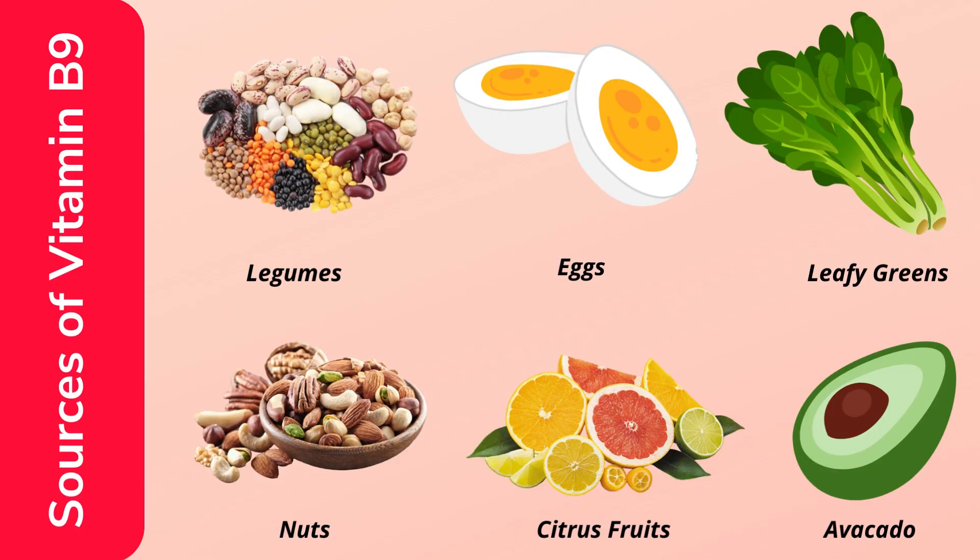Now let's look at the various sources of vitamin B9. These can be found in various foods and vegetables like legumes, eggs, leafy greens, nuts, citrus fruits, and avocados. Citrus fruits include oranges, lemon, and grapefruit. These are the key dietary sources of vitamin B9.